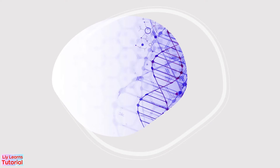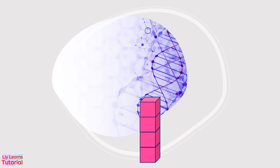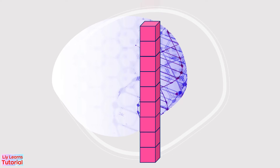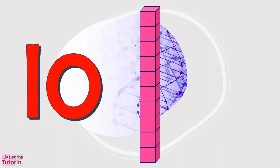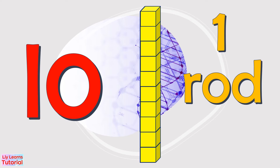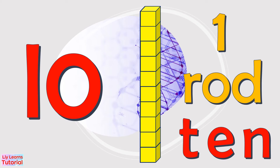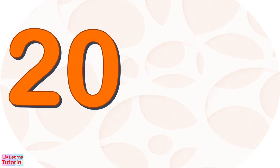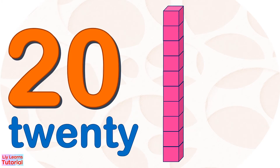Let's count the blocks: 1, 2, 3, 4, 5, 6, 7, 8, 9, 10. There are 10 blocks. We can also say this is one rod. When we count by 10, we say 10 for one rod, because each rod is equal to 10 units or 10 blocks. Now we count by 10: 10, 20.